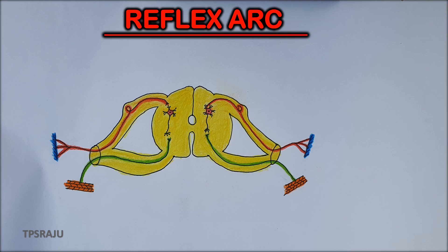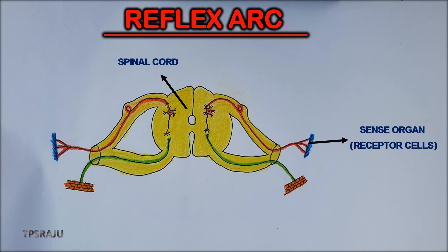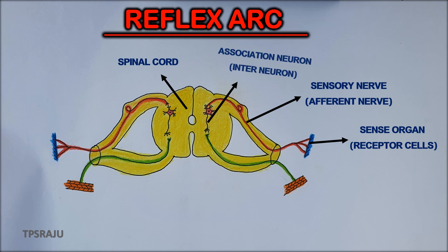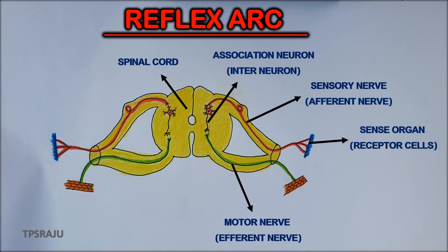Finally, shall we label the parts. Spinal cord. Sense organ. Sensory nerve. Association neuron. Motor nerve. Effector organ.